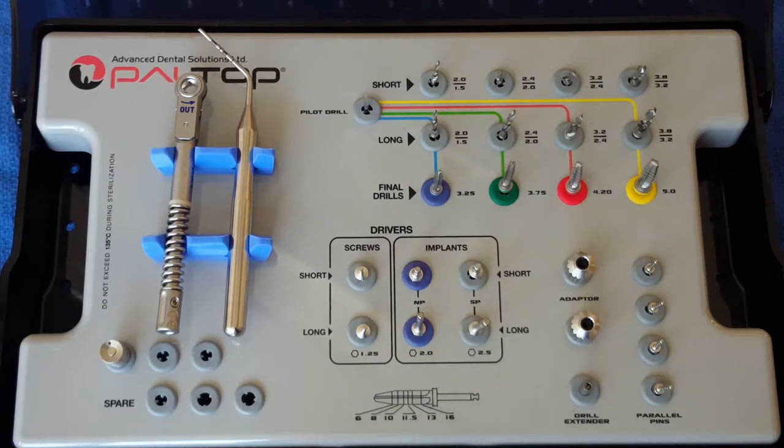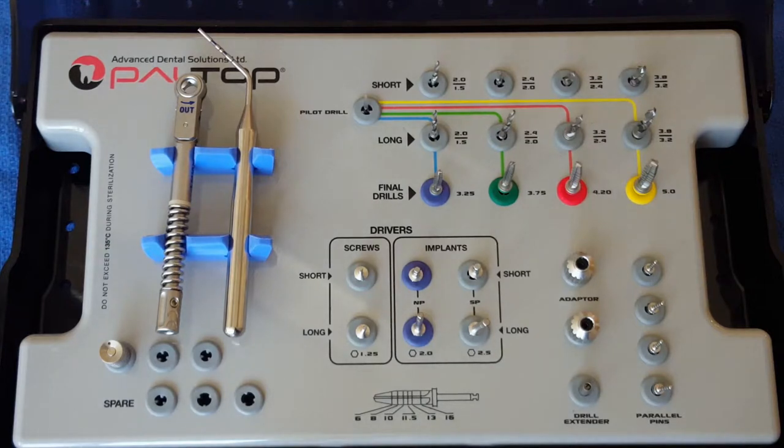The Premier Surgical Kit may be used for the placement of the full line of Paltop implants, including the Paltop Advanced Classic Implant, the Paltop Advanced Plus Implant, the Paltop Dynamic Implant, the Paltop PCA Implant, and the Paltop Diva Implant.